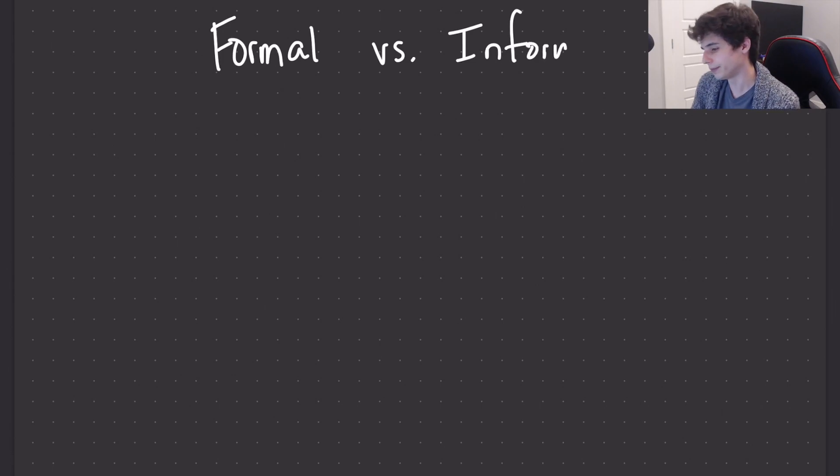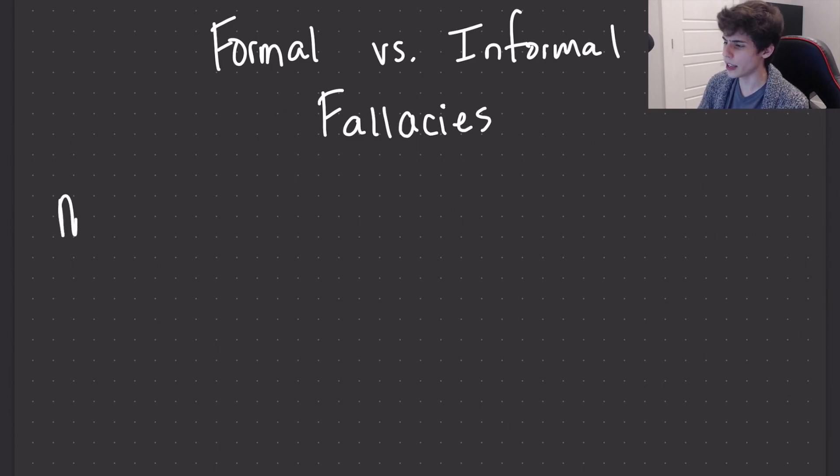Let's get into the distinction between formal and informal fallacies. First off, there are different forms of argument. Let's talk about the most common argument you might encounter in a textbook or in some kind of paper: modus ponens, which goes something like this. The first premise is something like a conditional. If A, then B.